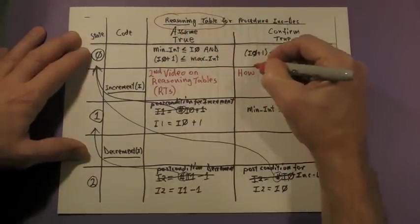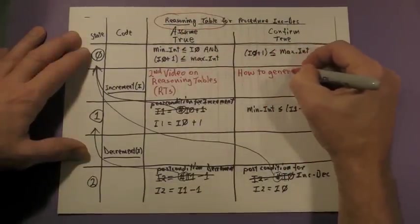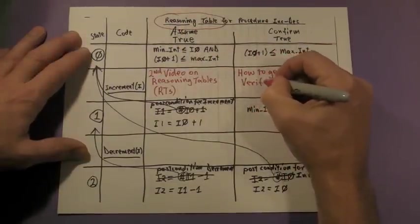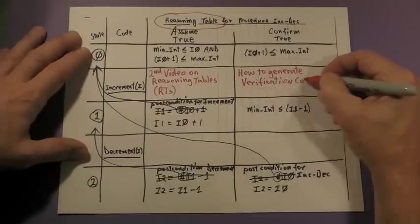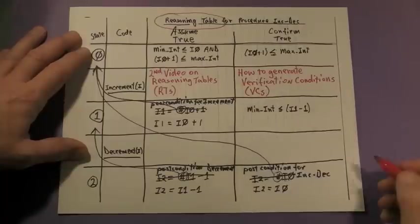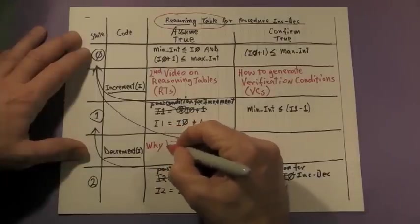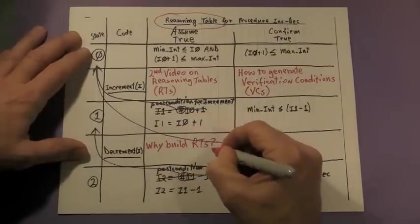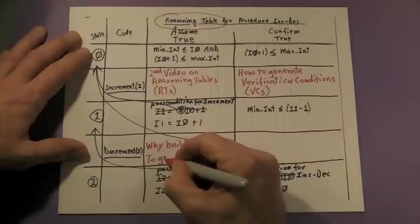The focus of this video is to show you how to generate verification conditions, also known as VCs. We're going to generate the VCs using the entries we made in this reasoning table. The previous video might have left you asking, why build a reasoning table? And the answer is, so we can generate VCs.